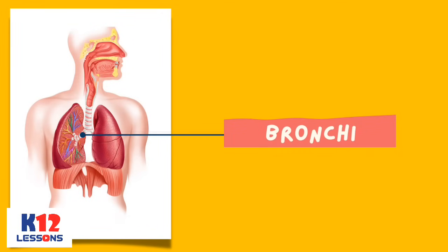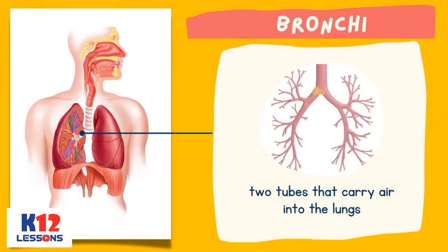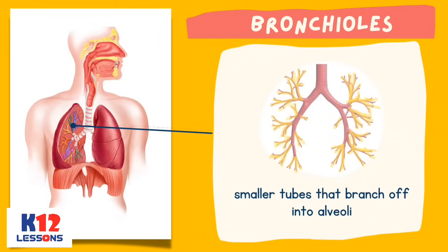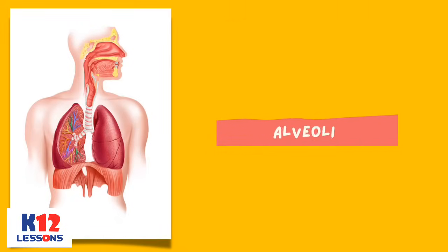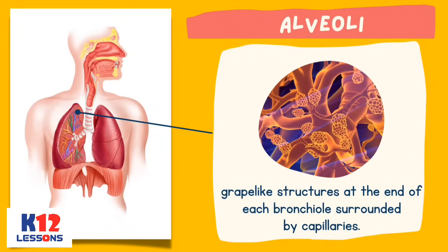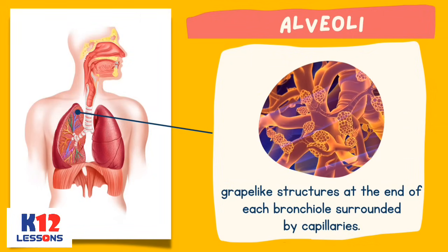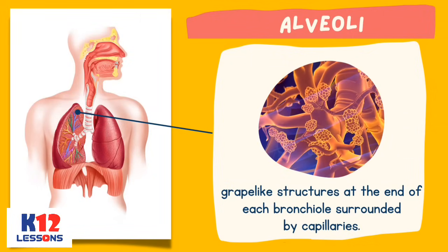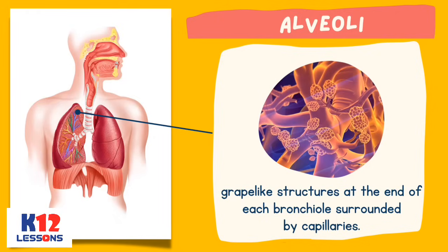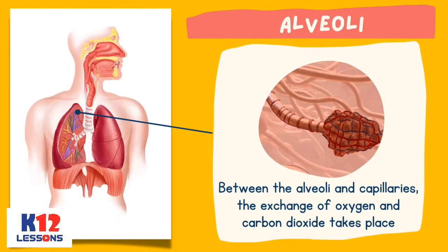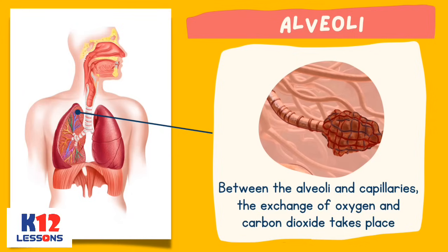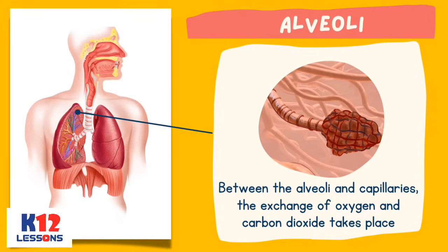Bronchi are two tubes that carry air into the lungs. Bronchioles are smaller tubes that branch off into alveoli. Alveoli are grape-like structures at the end of each bronchiole, surrounded by capillaries. Between the alveoli and capillaries, the exchange of oxygen and carbon dioxide takes place.